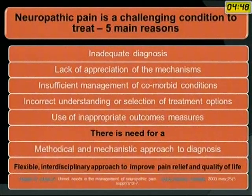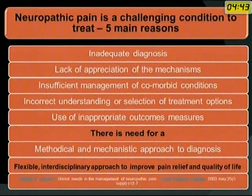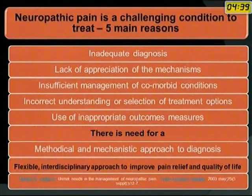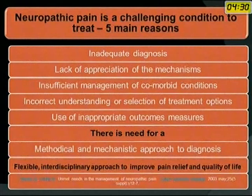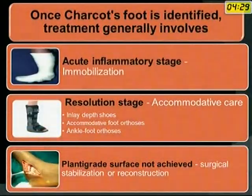The five main challenges in treatment of neuropathic joints are: inadequate diagnosis, lack of appreciation of the mechanisms, insufficient management of comorbid conditions, incorrect understanding or selection of treatment options, and use of inappropriate outcome measures. Hence, there is a need for a methodical and mechanistic approach to diagnosis and a flexible interdisciplinary approach to improve pain relief and quality of life.